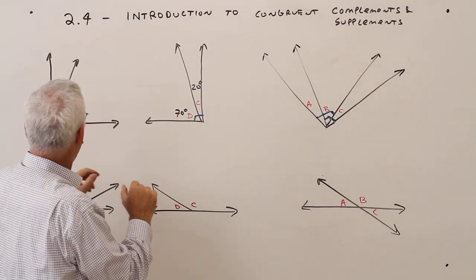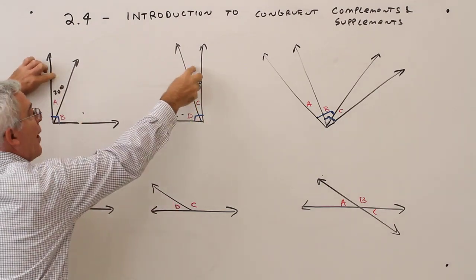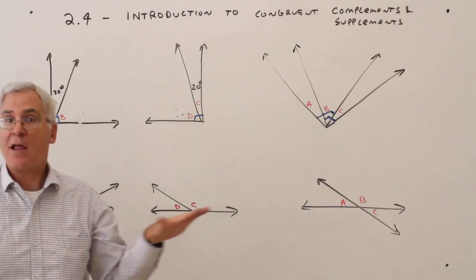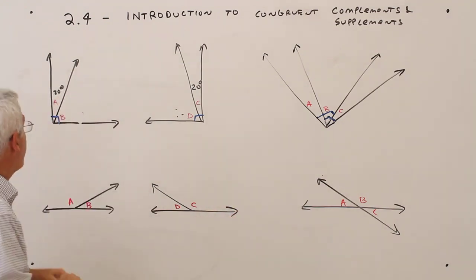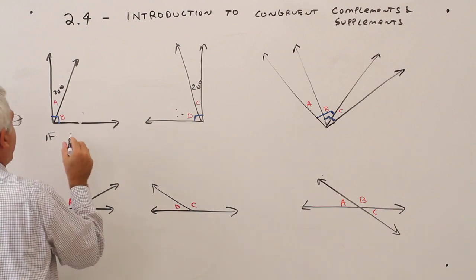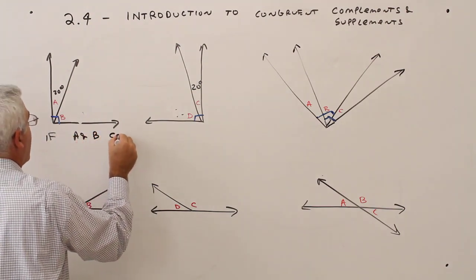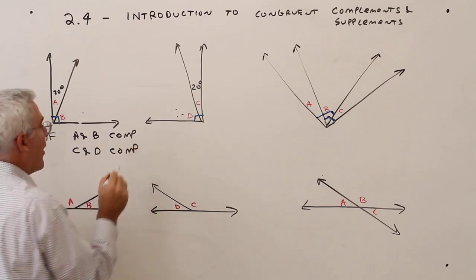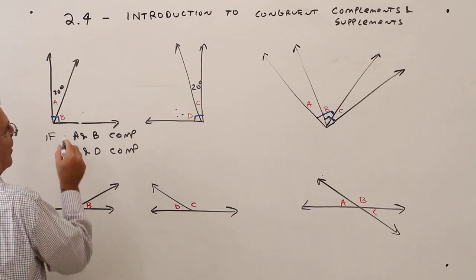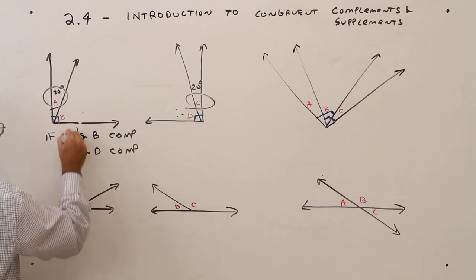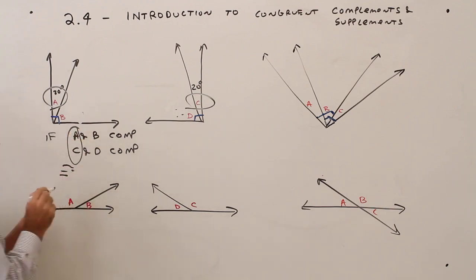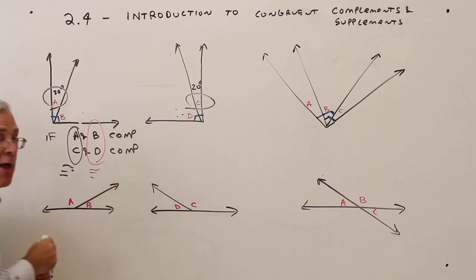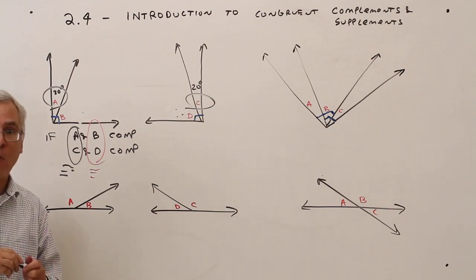So here's what I want to establish: these two angles A and B are complementary, and these two angles C and D are complementary. If I know that A and C are congruent, then I can conclude that B and D are also congruent. I'm laying the groundwork for a future theorem.